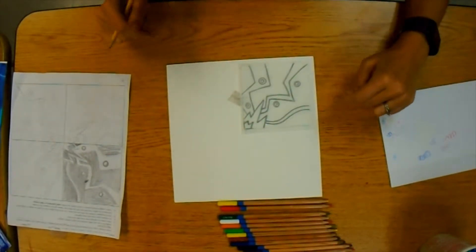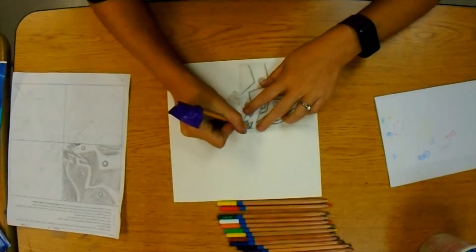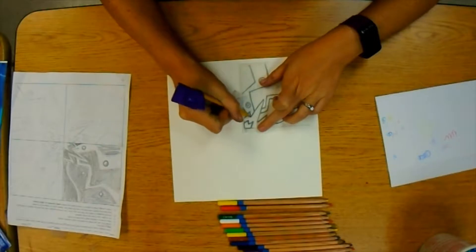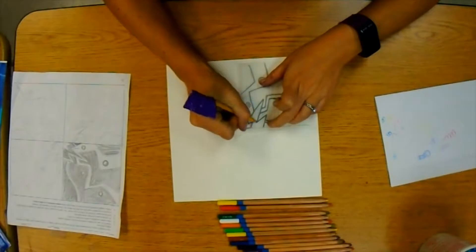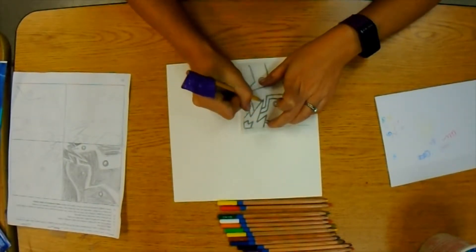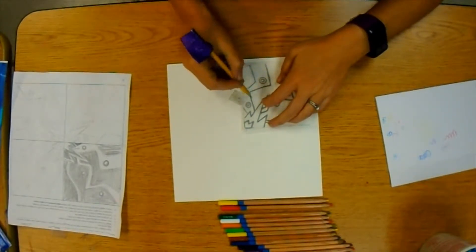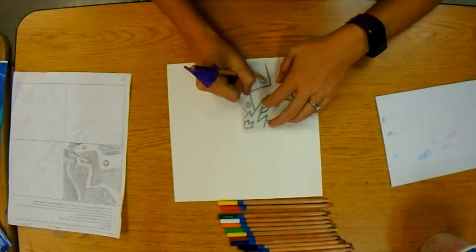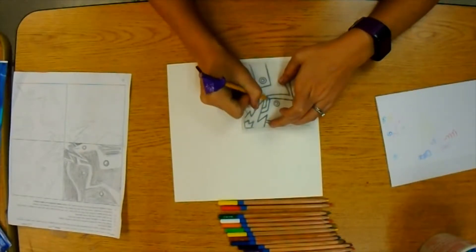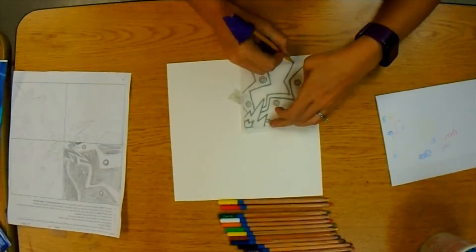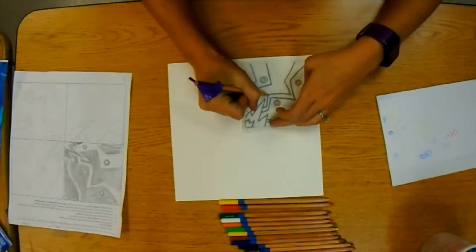I'm just going to hold this still and trace. You should already have pencil on the back of this if it's your original piece. If you needed to get a new piece, remember that you have to have pencil on both sides. Otherwise, you're not going to get a print on the paper below you. When I finish tracing this, I'm going to take it off my page to see how that print turned out. I'm just going to try and hold it as still as I can while I trace.